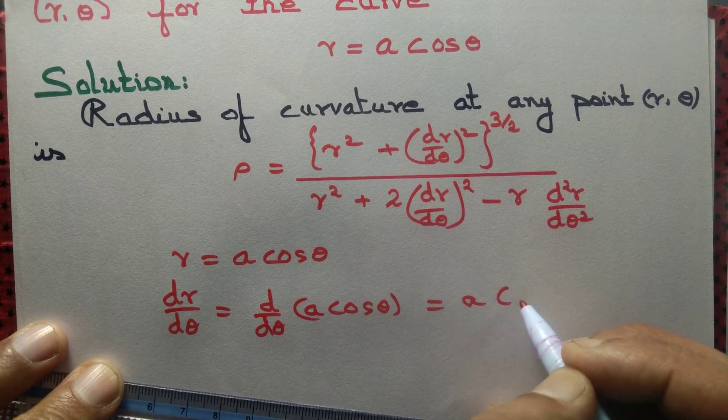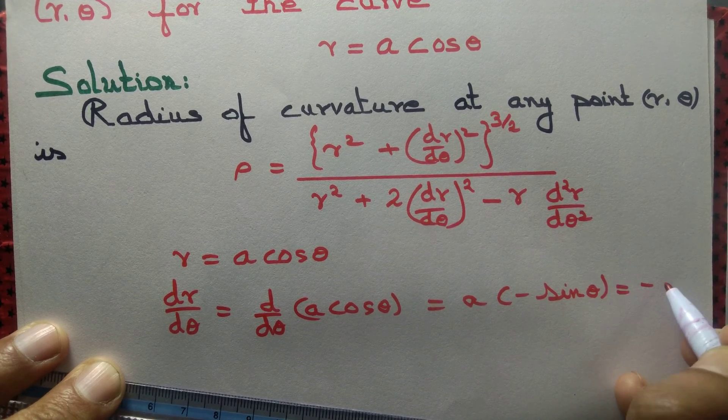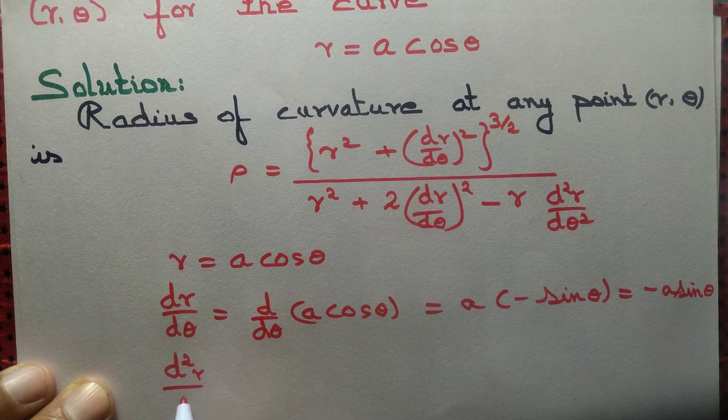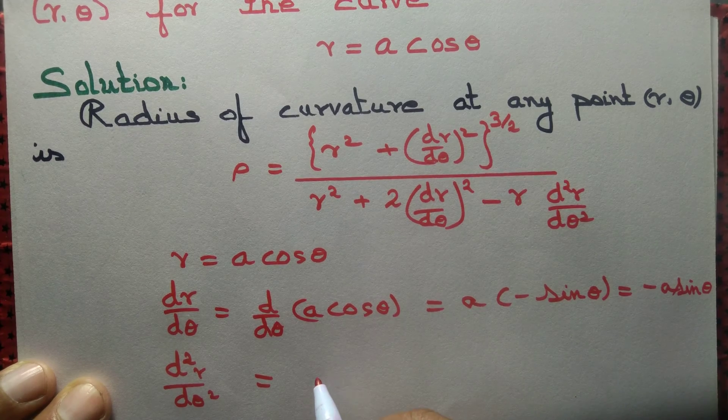Derivative of cos theta is minus sine theta, so that's equal to minus a sine theta. So d²r by d theta square, we differentiate once again. Derivative of sin theta is cos theta.